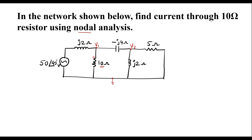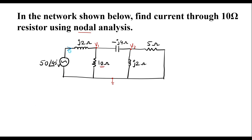So in node analysis, after identifying the nodes, we have to mark all branch currents. Let me assume current through this branch is I1, current through this branch is I2, this is I3, this is I4, and let current through this branch is I5.